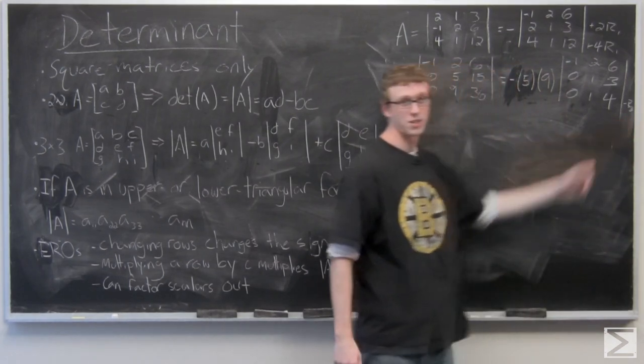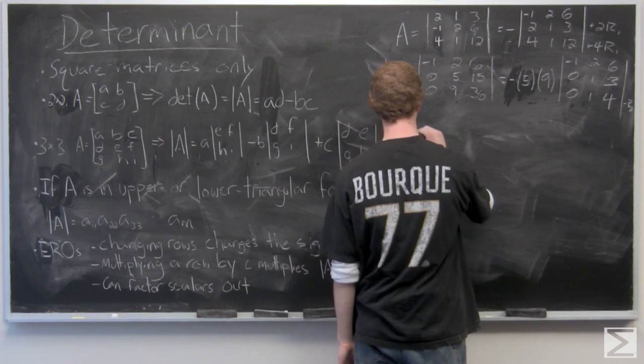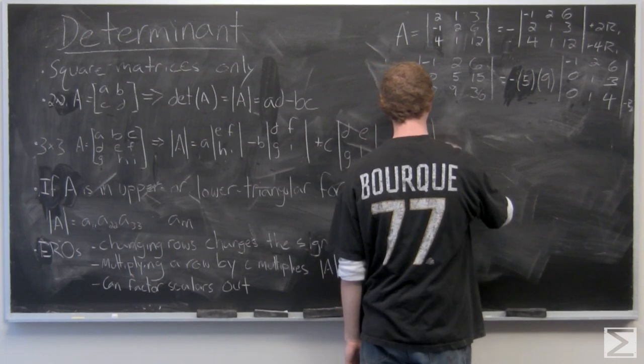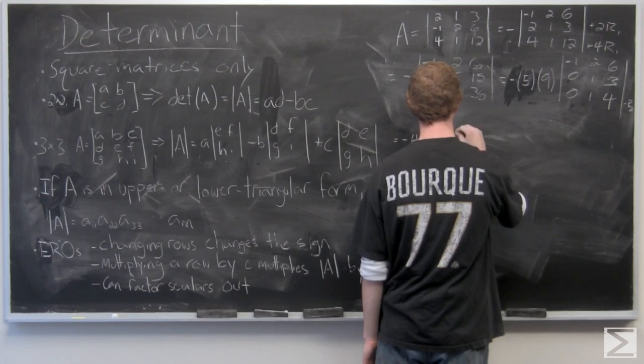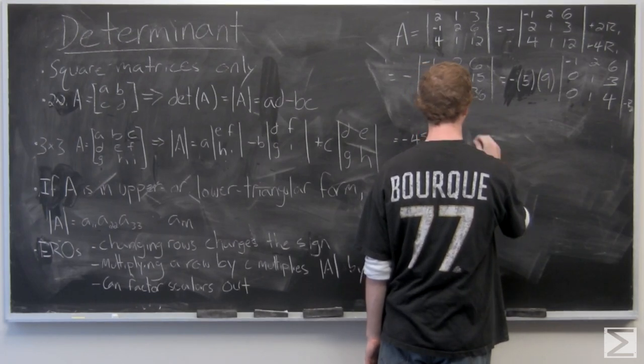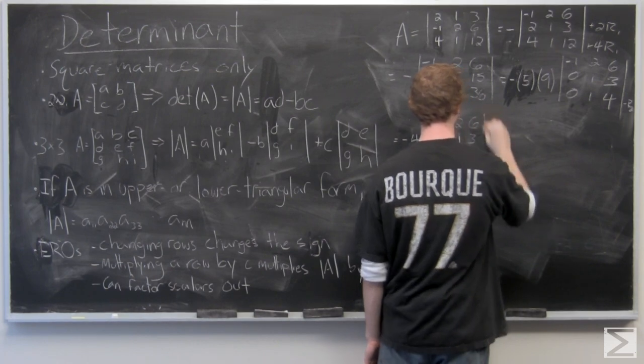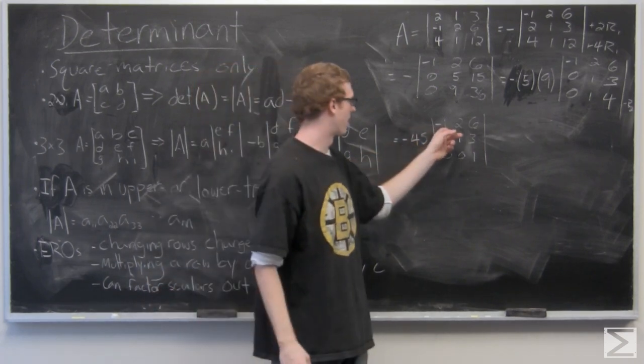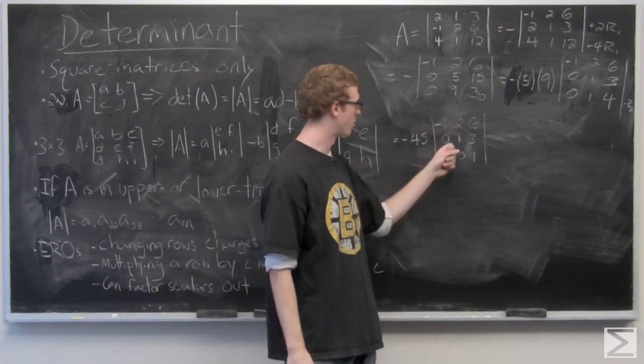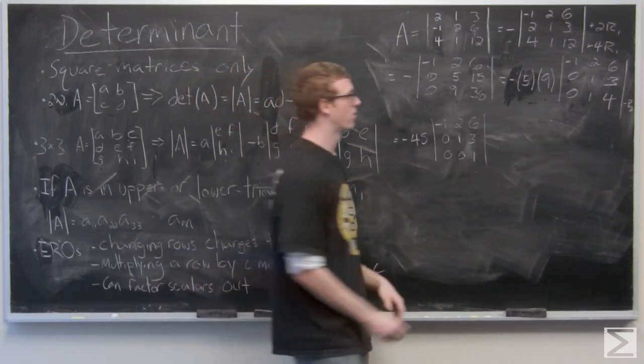So now we have it in upper triangular form, just multiply along the diagonal. Negative 1 times 1 times 1 times negative 45 is going to equal 45.